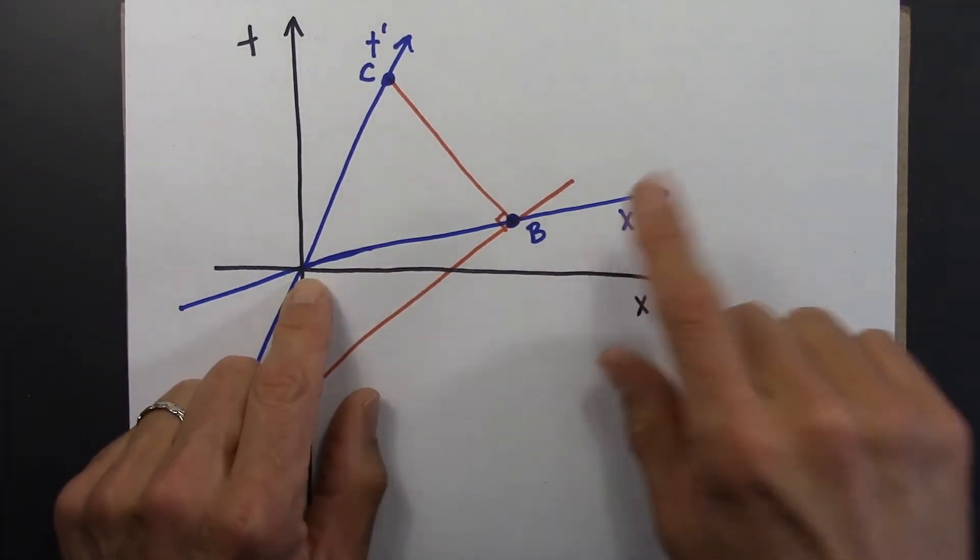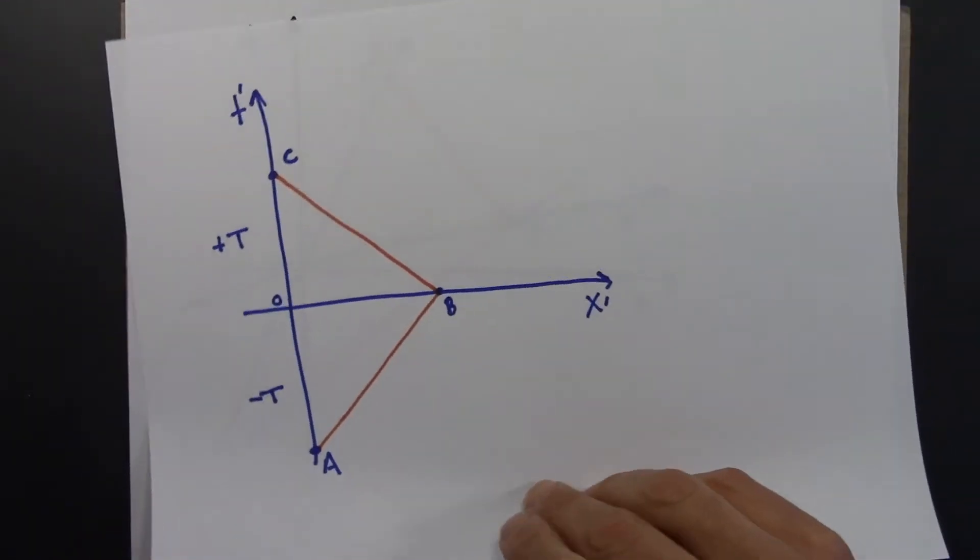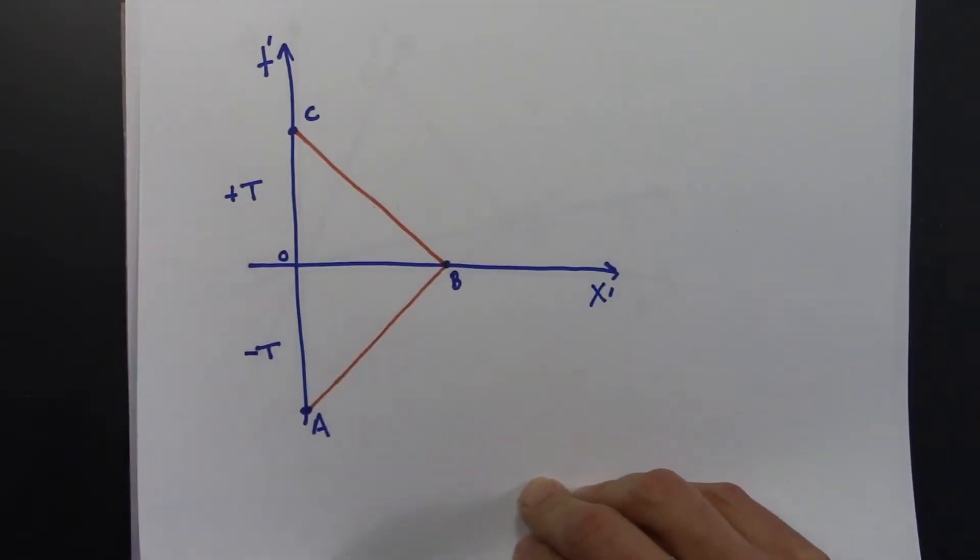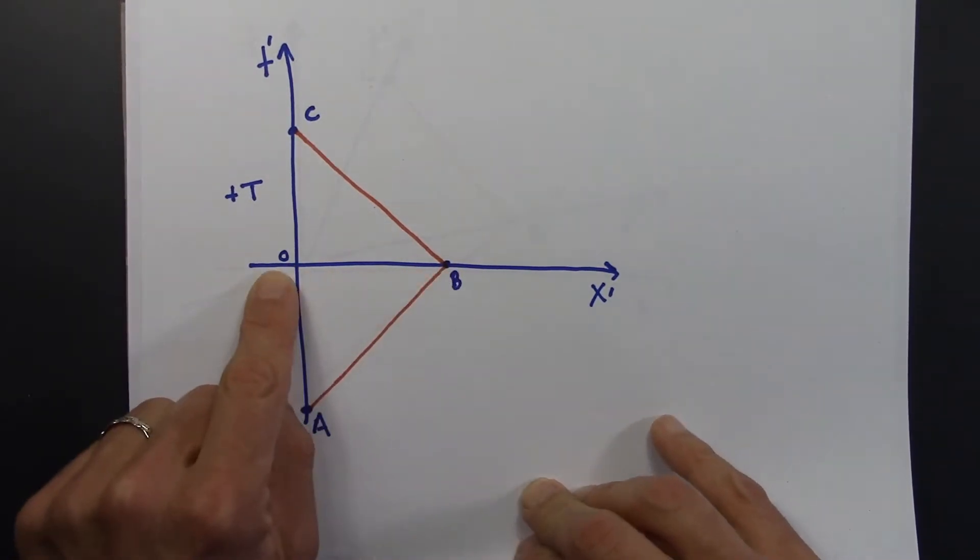And the line of reasoning, just as a reminder, is that we saw that in Beowulf's frame, event B and event O, the origin, are simultaneous.